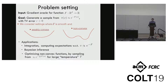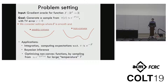So we're given access to the gradient of a function f, and our goal is to generate a sample from the Gibbs distribution proportional to e to the minus f with some TV error epsilon. We consider two settings where f is smooth: the first setting is when f is weakly convex, and the second setting is when f is non-convex. Some applications of this sampling problem are in integration, computing expectations, Bayesian inference, and optimization of non-convex functions.